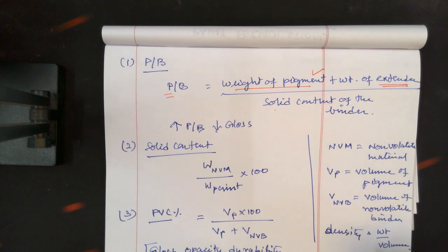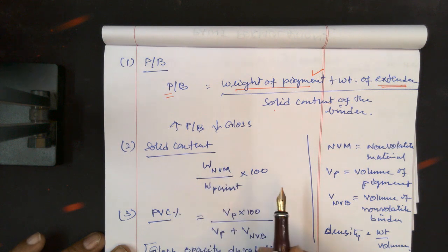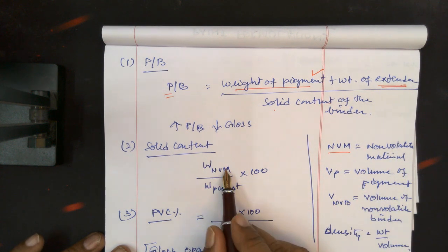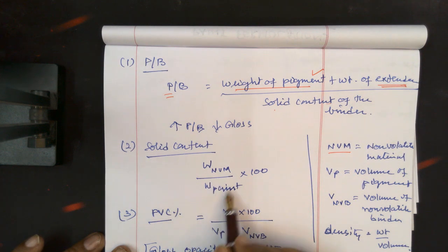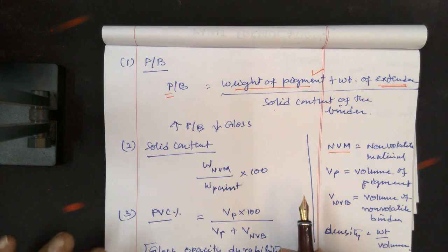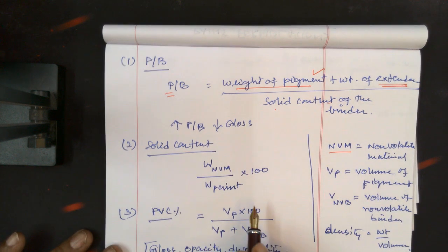Then solid content - this is nothing but the weight of the non-volatile material present in the paint divided by the weight of the paint we have taken, times 100. How it should be taken, I will detail everything in the experimental part.